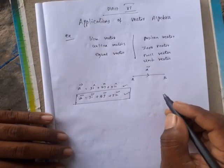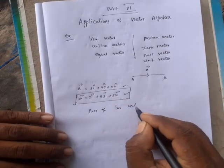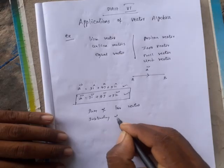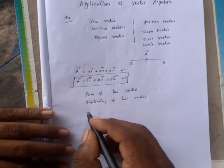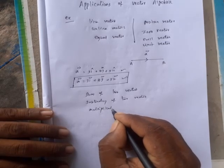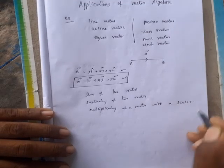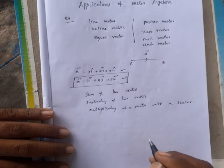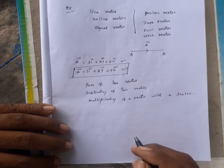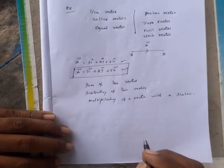In 11th standard, we know the sum of two vectors, the subtraction or difference of two vectors, and the multiplication of a vector with a scalar. In this 12th standard, we discuss the dot product and cross product of two vectors — that is, the product of two vectors.